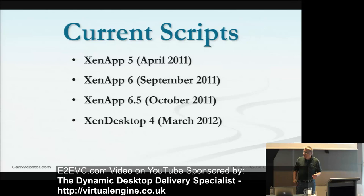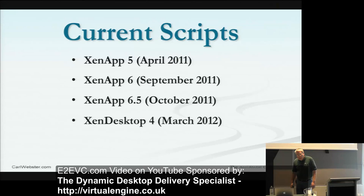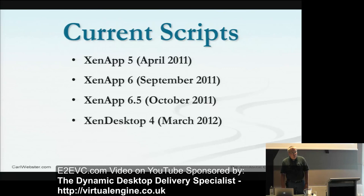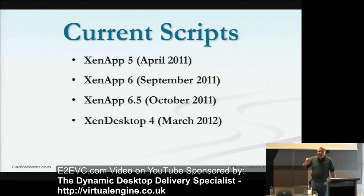For ZenApp 5, ZenApp 6, ZenApp 6.5, and ZenDesktop 4, Citrix did a really good job with the PowerShell — you could Get-XAFarm, Get-XDFarm, Get-XDBroker, everything was nice and neat. Then after getting the ZenDesktop 4 script done, they said, 'By the way, we've got PVS 5.6, PVS 6.0, and PVS 6.1 farms — could you leave us some documentation?' I was like, 'Paid to write another script' — until I started looking at that pathetic piece of crap that is PVS PowerShell.